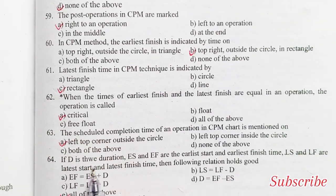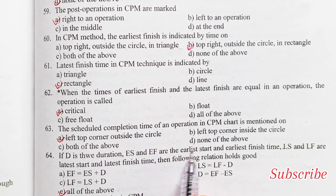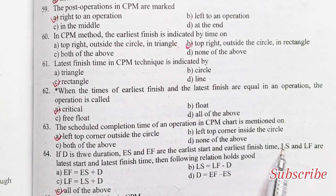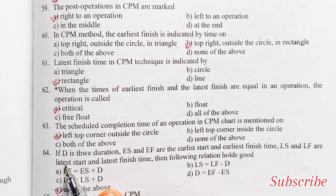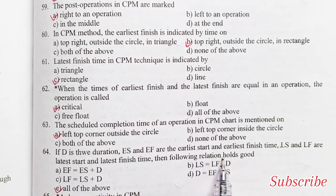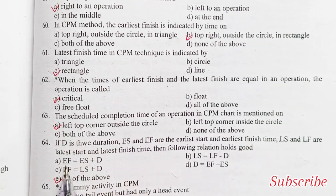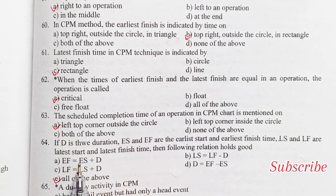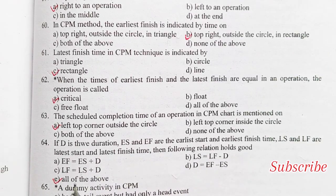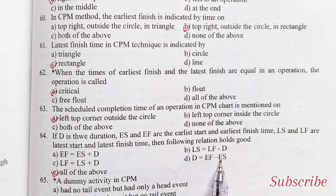If D is the duration time, ES and EF are the earliest start and earliest finish times, then the following relations hold: EF = ES + D; LS = LF − D; LF = LS + D.